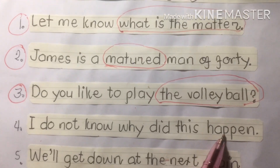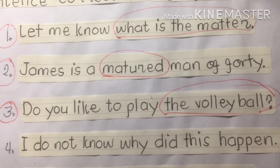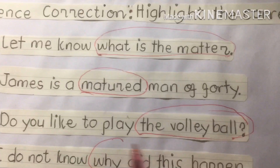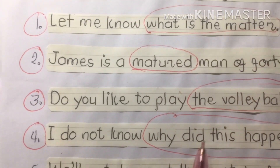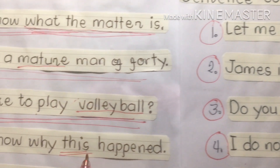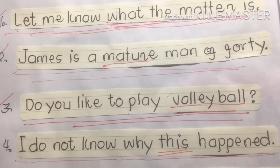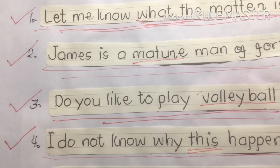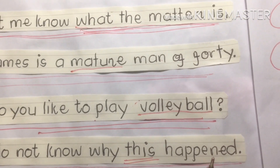Four: 'I do not know why did this happen?' The phrase 'why did this happen' makes this an incorrect sentence. Instead of using 'did,' we change it to: 'I do not know why this happened.' This agrees with subject-verb agreement. 'I do not know why this happened' is the correct one, and 'why did this happen' is the grammatical error.